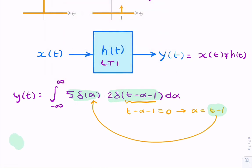So the final answer will be y(t) equals 5 times 2 times the delta function at t minus 1. And that 5 times 2, I can replace with 10. And that's my final answer.